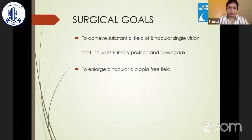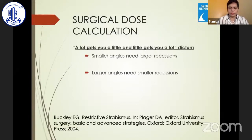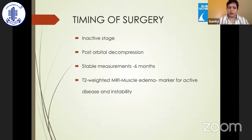Surgical goals should be to achieve a substantial field of binocular single vision, focusing on primary gaze and down gaze; enlarging the diplopia-free binocular field is also an acceptable goal. For surgical dose calculation, we follow the dictum by Jampolsky: smaller angles often need larger recessions and larger angles need smaller recessions, the opposite of traditional strabismus surgery. Timing requires stable angles for at least six months, or a quiescent disease state. If orbital decompression is planned, strabismus surgery follows. Muscle edema on T2-weighted imaging can be a marker of disease stability, though some patients show continued activity despite a quiescent MRI.